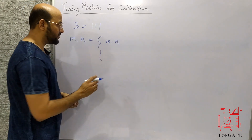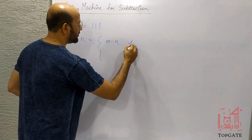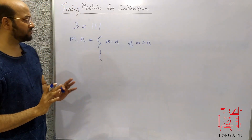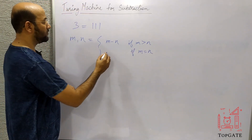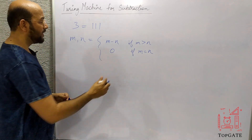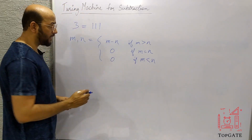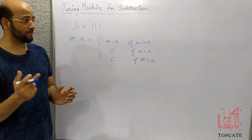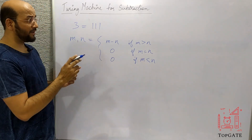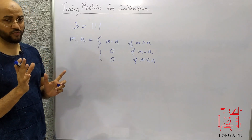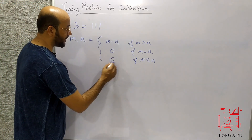If M is greater than N, I will get M minus N — the correct value. That is if M equals 3 and N equals 2, so M minus N will be 1. Now the second case is if M is equal to N, then we will get 0. That is again a straightforward case. And the third case is if M is less than N, then in that case I will again get 0. Because in unary I do not have any means to represent a negative number. Suppose M equals 3 and N equals 4, then we will get minus 1, but I do not have any means to represent minus 1 in unary form. So in that case also I will show it as 0.